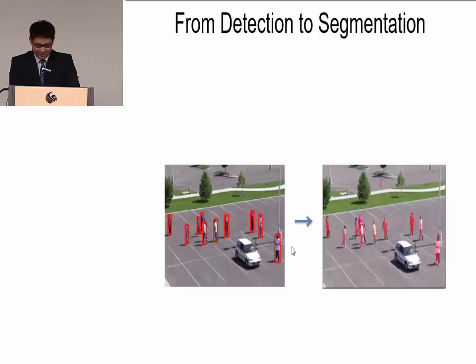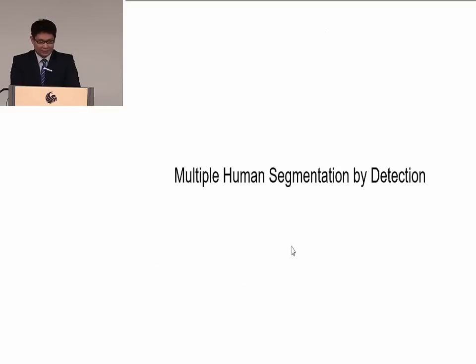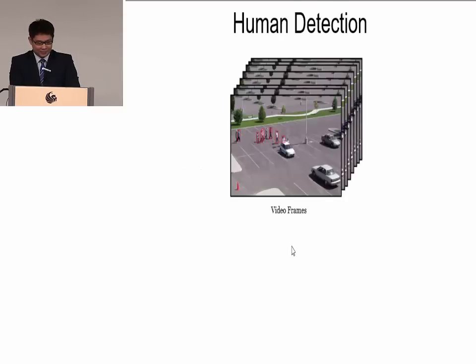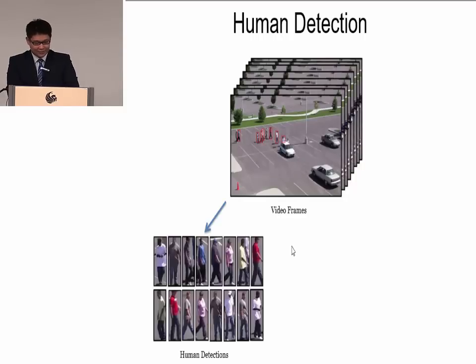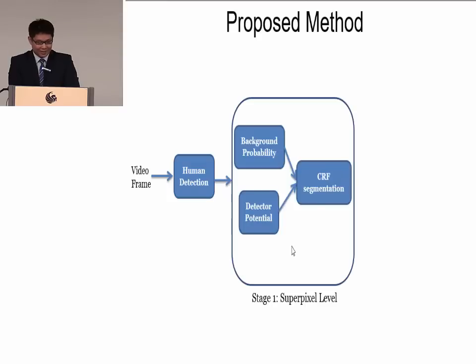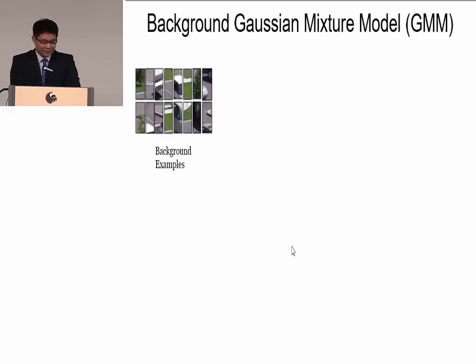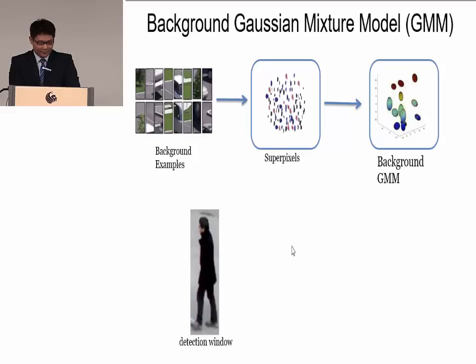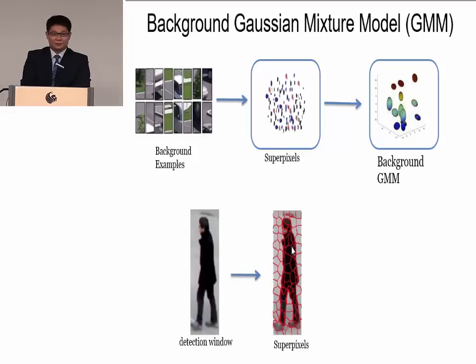In addition to tracking, we can also use detection to initialize segmentation. This is the third piece of my work: multiple human segmentation by detection. Given the video frames, the first step is human detection. We use the proposed human detection method to get human detections and many background examples. The next step is detection at the superpixel level. The segmentation requires a background probability and a foreground probability. To get the background probability, we build a background Gaussian mixture model. Given background examples, we extract all superpixels and build the background GMM on the color feature space.